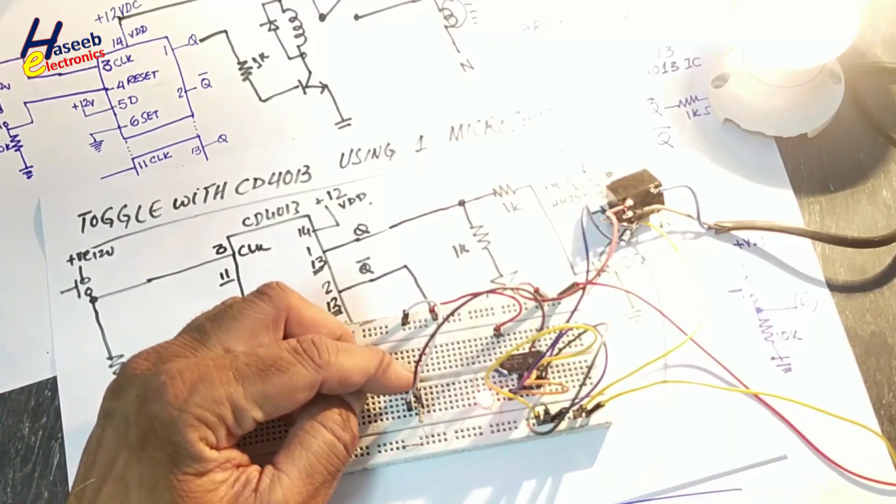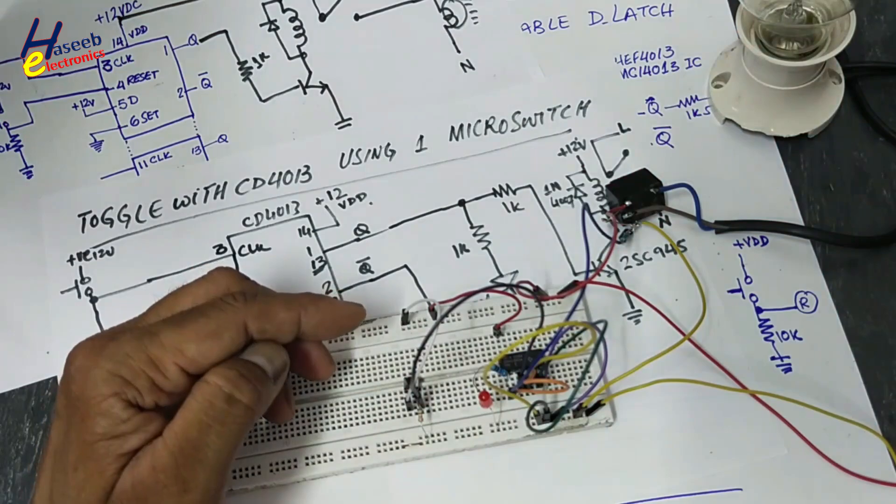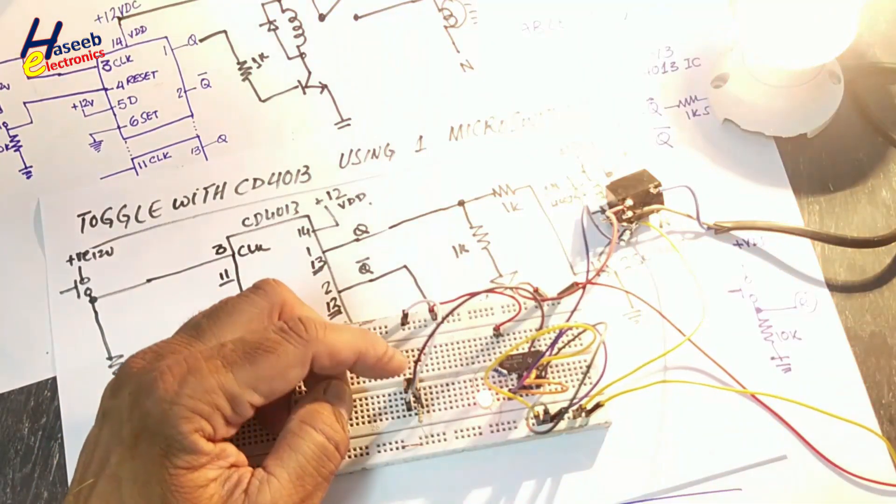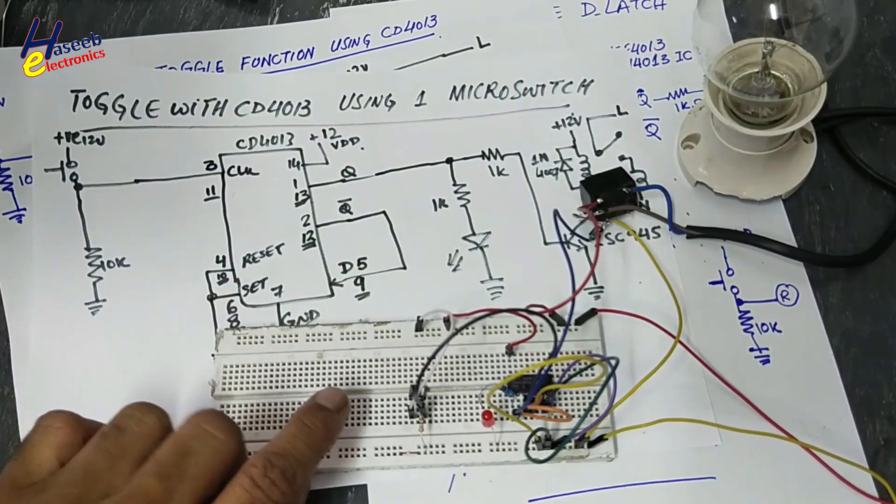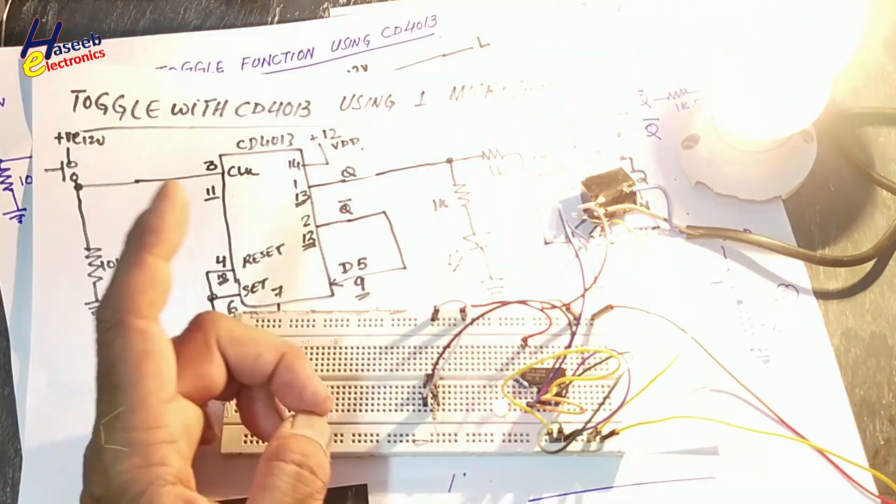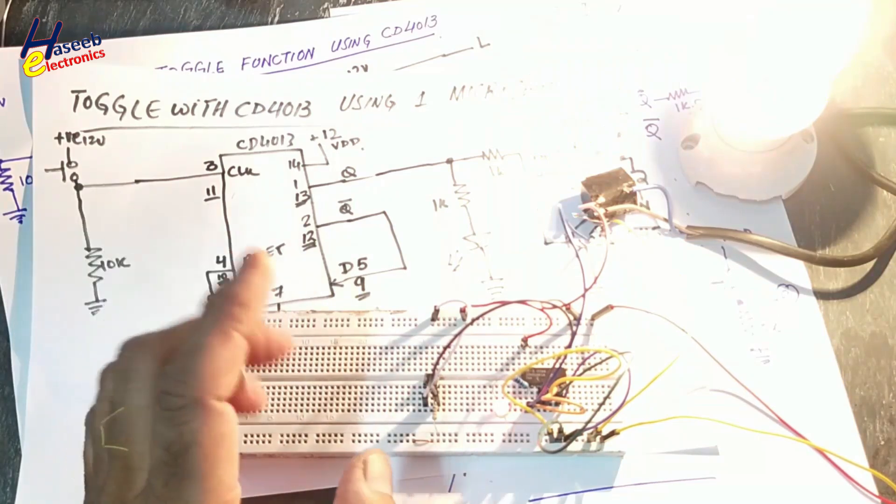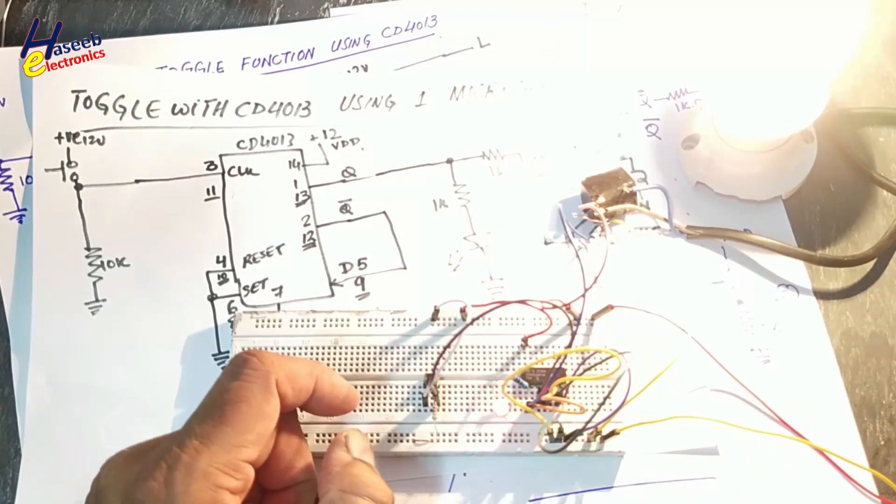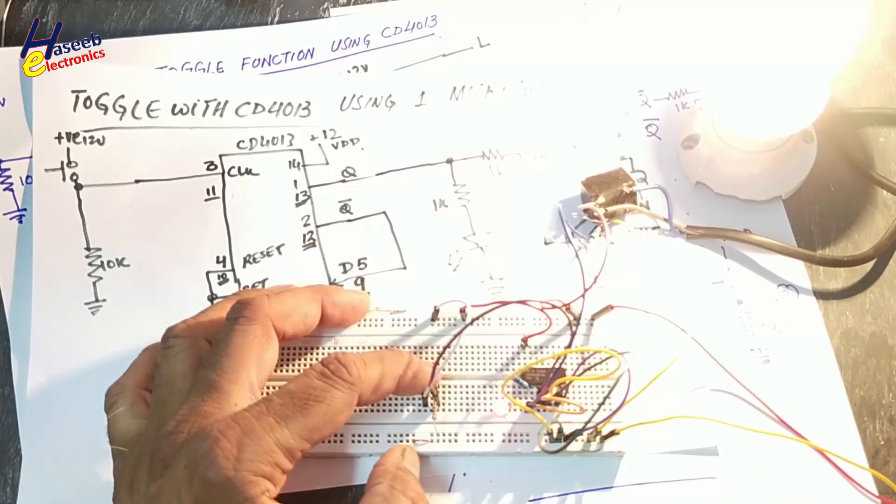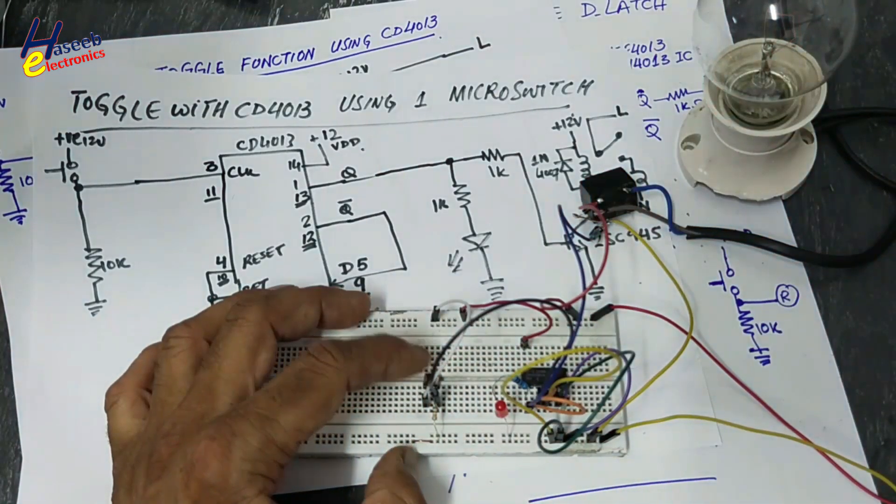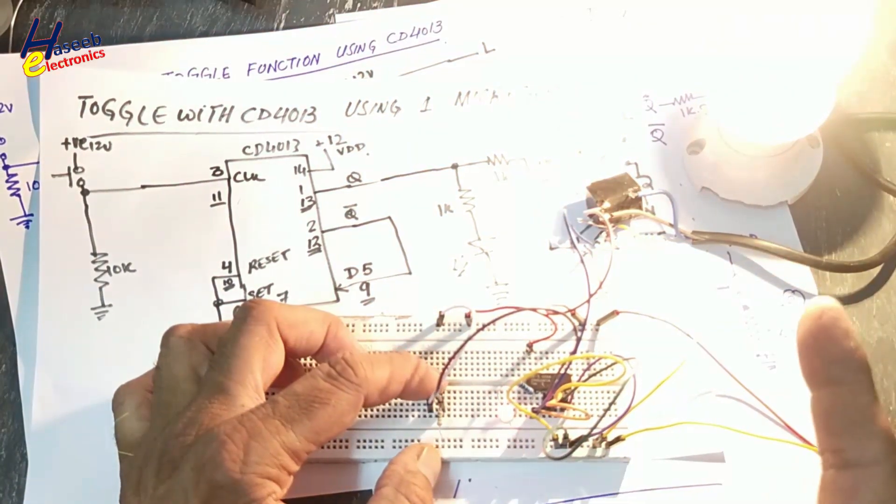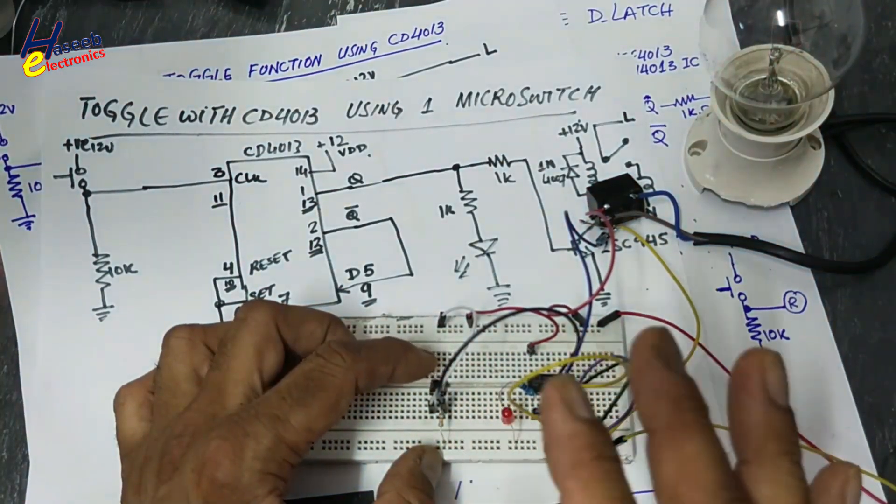I will press this button. Load is off. I will press again, on. Now if I will press this button, load is off. At first click, the load is on. Second click, load is off.